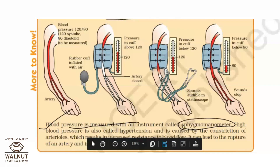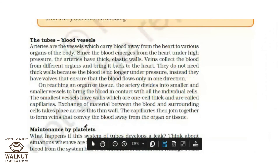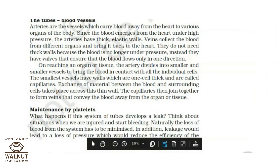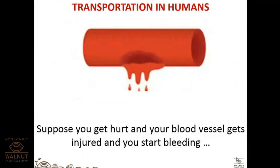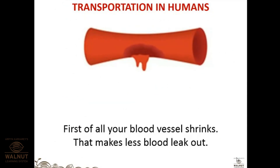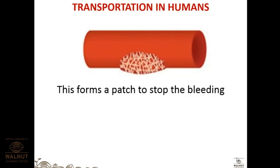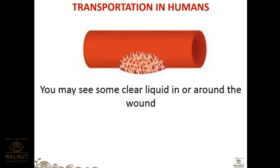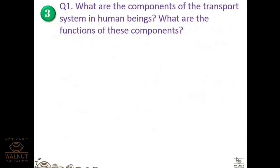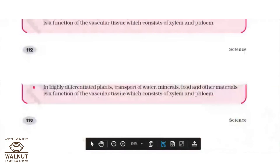The role of platelets: whenever there is a cut or wound or leakage, platelets come to the site and provide a patch. The blood vessel shrinks to reduce blood leakage; platelets stick together around the wound to patch it. This forms a clot to stop bleeding. Once the clot closes the wound, surrounding blood vessels deliver fresh nutrients to help the wound heal.